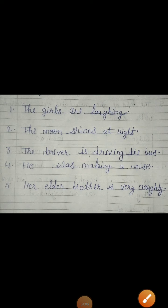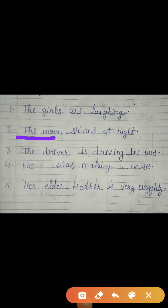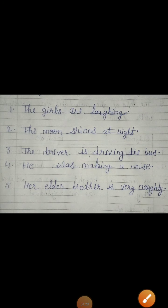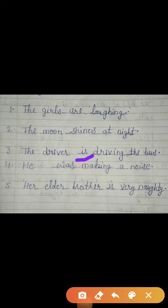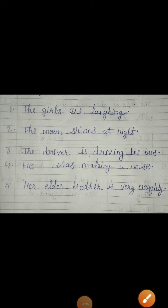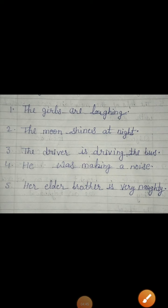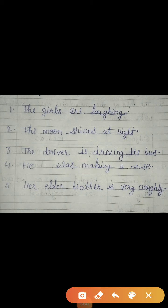In the second sentence, what is our subject? The moon. And 'shines at night' — shines is a verb, so predicate starts with the verb, and 'shines at night' is our predicate. Third: the driver — 'is driving the bus' is our predicate. In the fourth, 'was' starts the predicate, and everything after 'was' is your predicate. In the fifth, 'her elder brother' is our subject, and 'is very naughty' is our predicate.